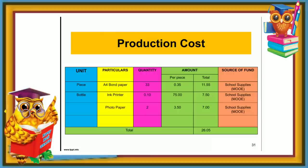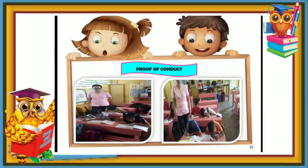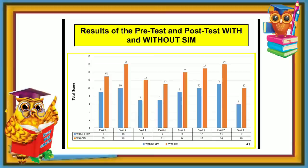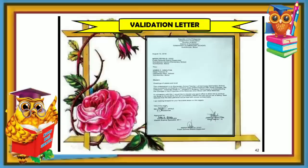Production cost — this is where you can see all the expenses in making the SIM. The cost should be low to meet the criteria of being easy to reproduce. Proof of conduct — this proves that you actually conducted the SIM with students who have least mastered skills. It's also good to make a graph to show the difference between the pre-test and post-test to see if there is improvement. And the last but not the least is the validation letter, as proof that it is approved by your principal or PSDS.